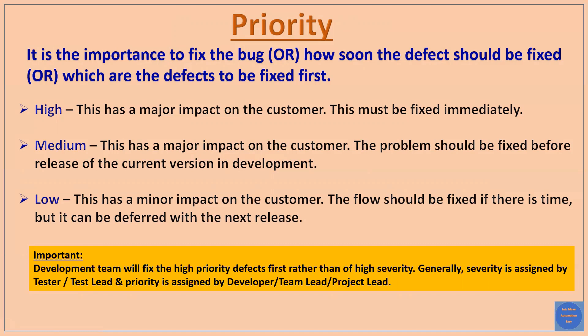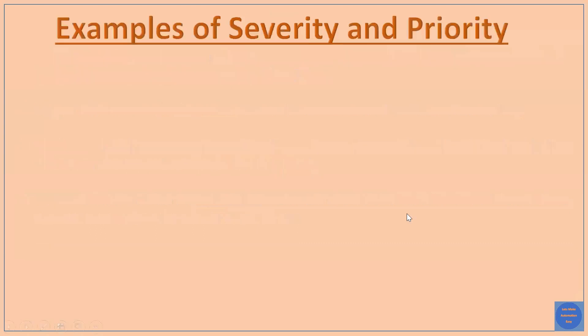The development team will fix high priority defects first rather than high severity defects. Generally, severity is assigned by the tester or test lead, and priority is assigned by the developer team lead or project manager. This is a very important distinction that is often asked in interviews.